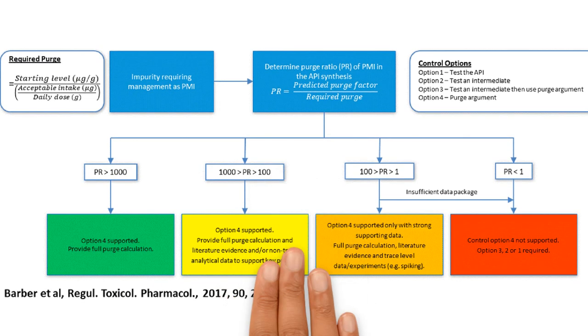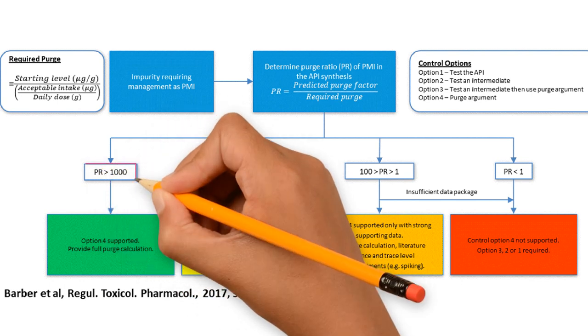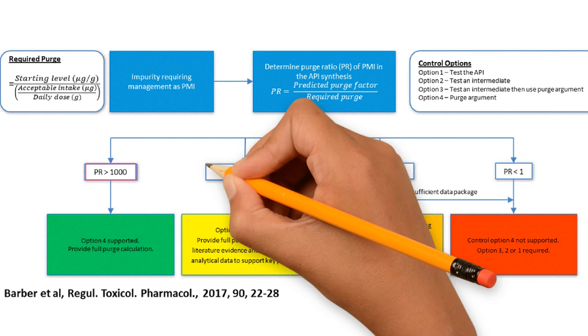Depending on the result of the purge ratio, this paper by Chris Barber and colleagues proposes which additional data would be required to meet ICH M7 option 4. If this ratio is any value higher than 1000, it means that the process is capable to purge the impurity 1000 times more than it would be needed to achieve the safe limit. Hence, option 4 can be used without the need for any experimental data.